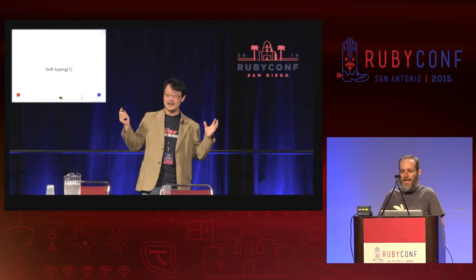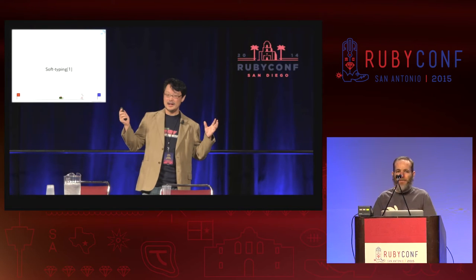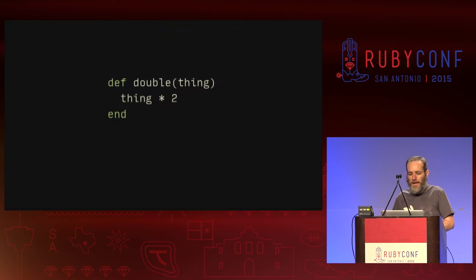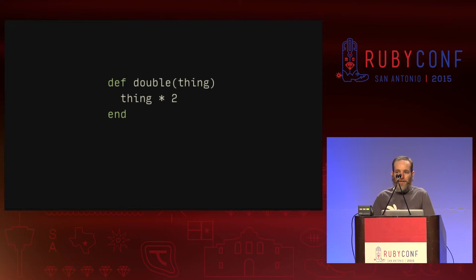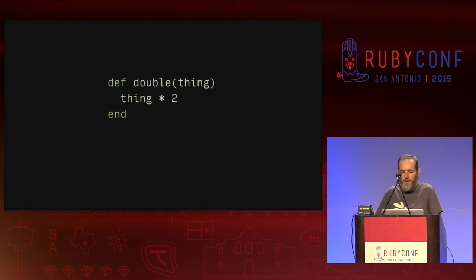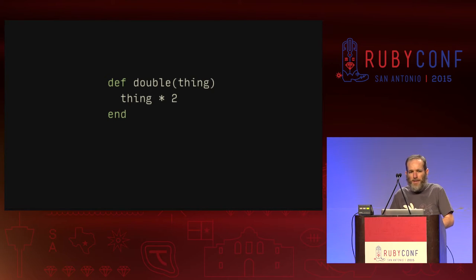In essence, soft typing is a way of combining the benefits of static typing with the flexibility of dynamic typing. To give you an example, here's a little piece of Ruby code — a very simple method that takes an argument and then calls times two on it. Because this is Ruby, we don't need to tell it anything about the types, but this also means we don't know much about the types.